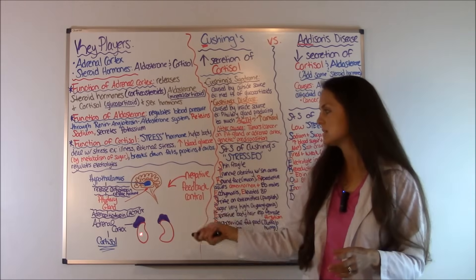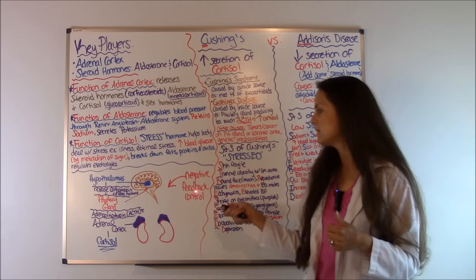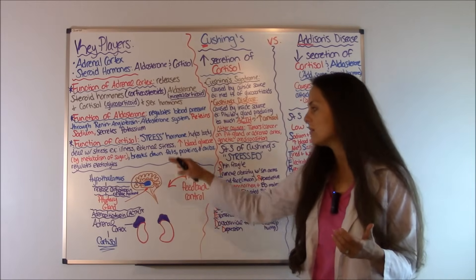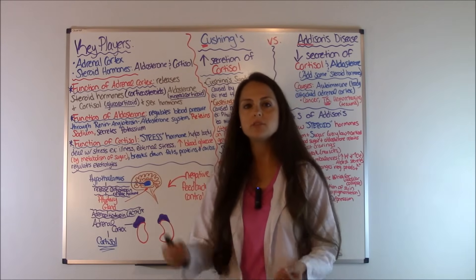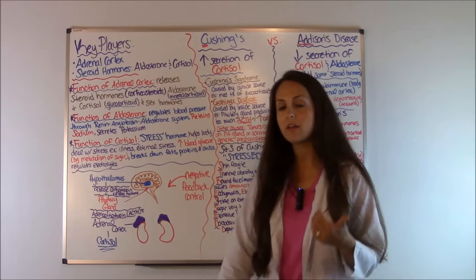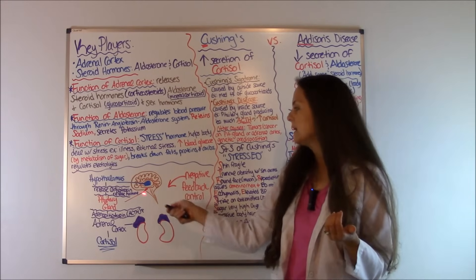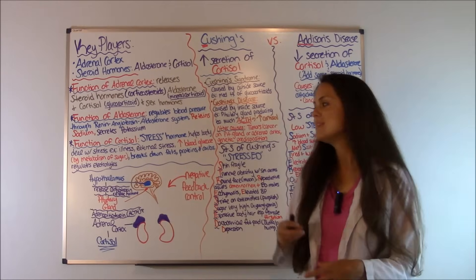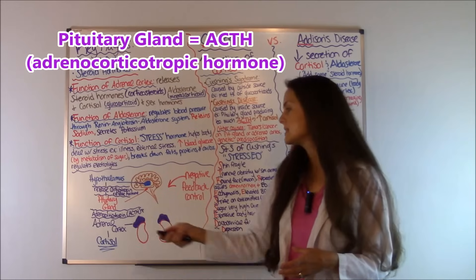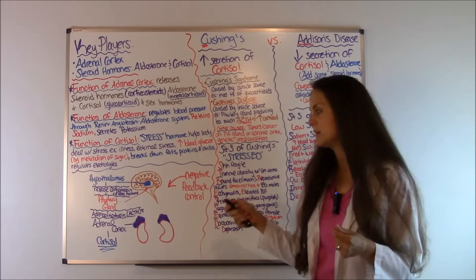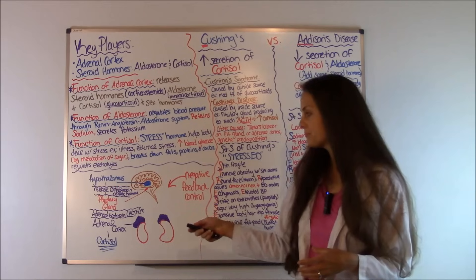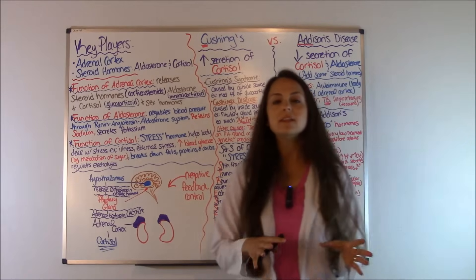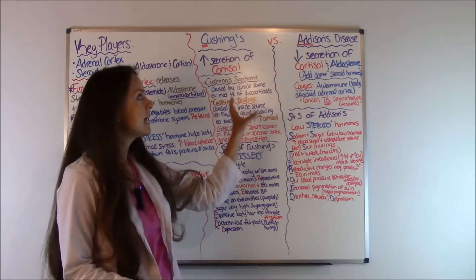Let's go over the negative feedback control, which plays a role especially in Cushing's syndrome. In your brain you have your hypothalamus, which releases CRH — corticotropin-releasing hormone. When it releases that, the pituitary gland releases ACTH — adrenal corticotropin hormone. That causes the adrenal cortex to release cortisol. That is the negative feedback of how everything works. Now let's go over the differences between Cushing's and Addison's disease.